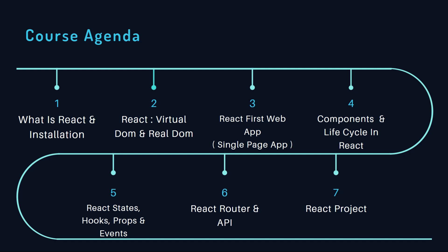Sixth will be covering React Router and APIs. In the API section, we won't learn how to create an API — we'll just use a dummy API. We'll search for a dummy API on Google and learn how to fetch data from it.